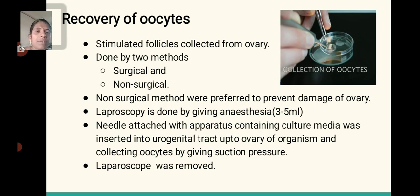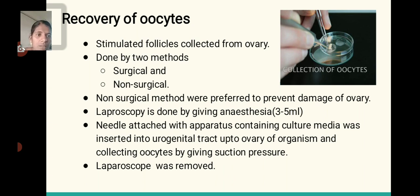Recovery of oocytes: In stimulated super ovulation, follicles are collected from the ovary using two methods — surgical and non-surgical. The non-surgical method is used to prevent damage to the ovary and involves laparoscopy. In laparoscopy, 3-5 ml of anesthesia is administered first. A needle attached to tubing containing culture media is used. The laparoscopy needle is inserted into the urogenital tract up to the ovary, and oocytes are collected by applying suction pressure. The collected oocytes and laparoscope are then removed.